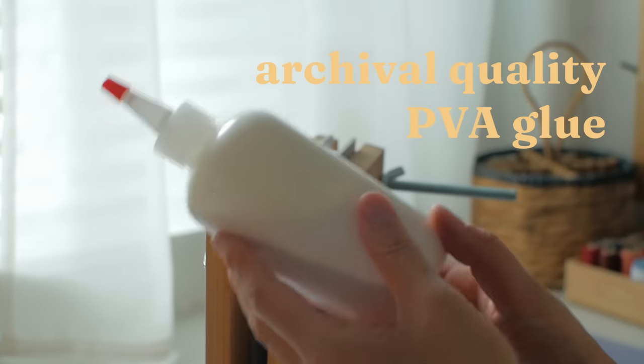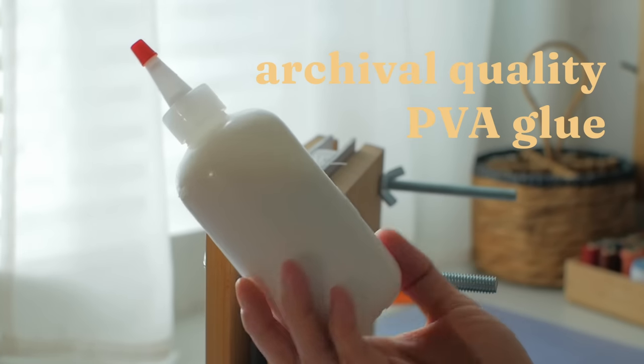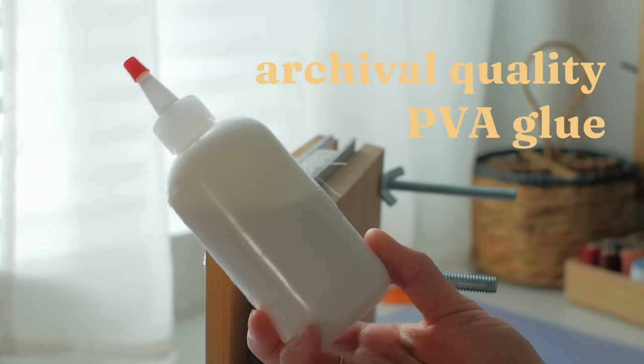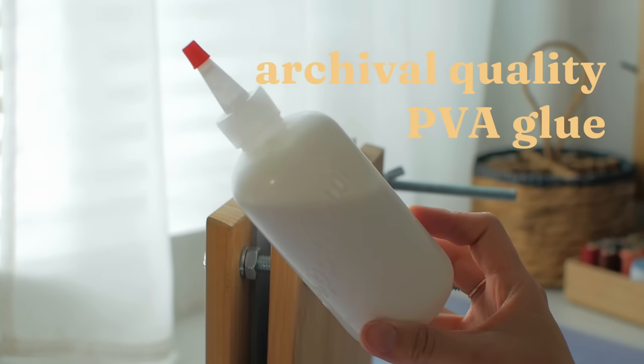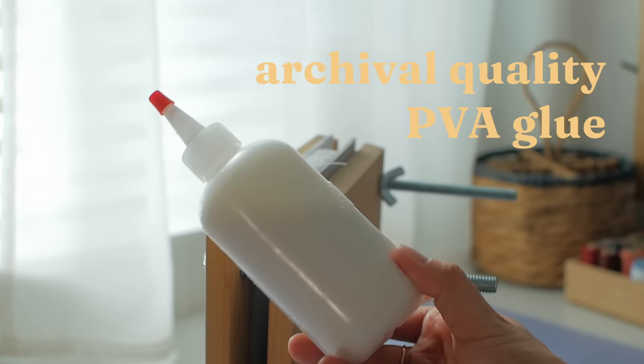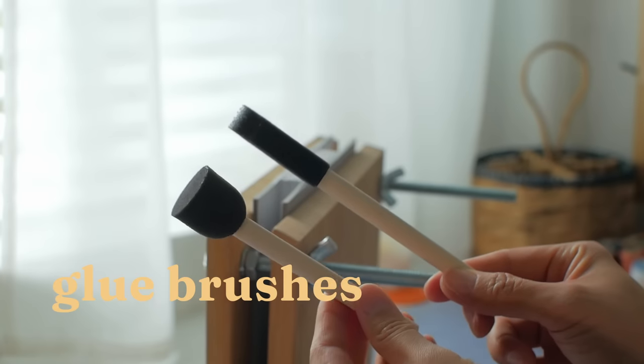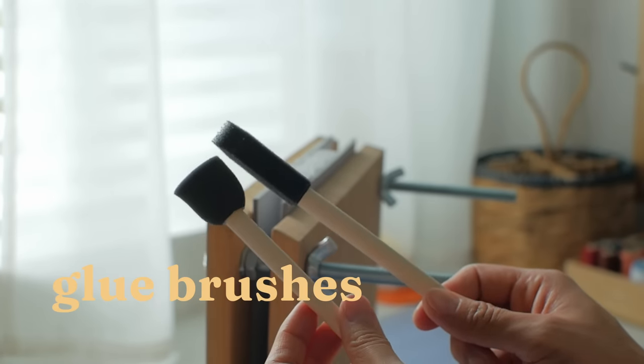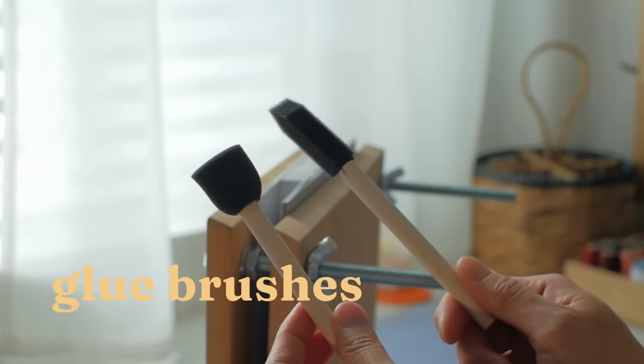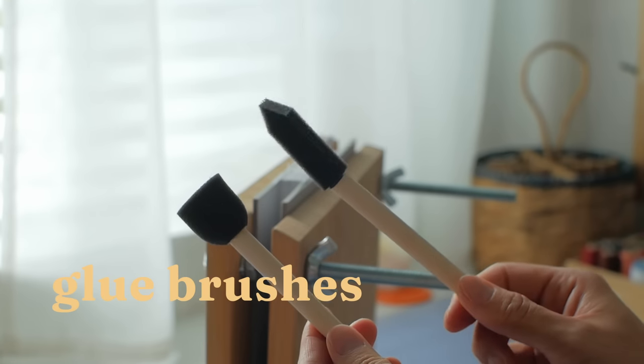This is archival quality PVA glue. Sourcing archival quality glue is important because it will ensure the adhesive won't yellow or degrade and will last for many years. I like to use foam brushes to apply glue, and they're easy to find at the craft store. There are brushes made specifically for gluing, which I'll likely get after I use up the foam ones.